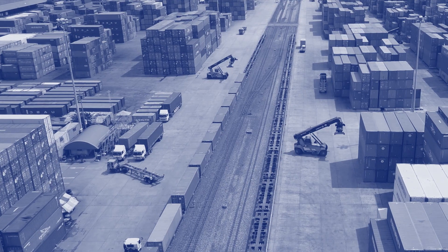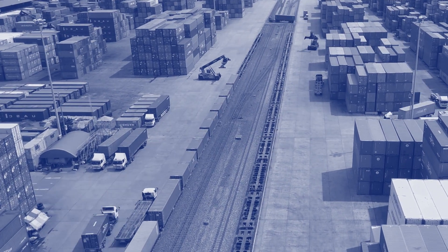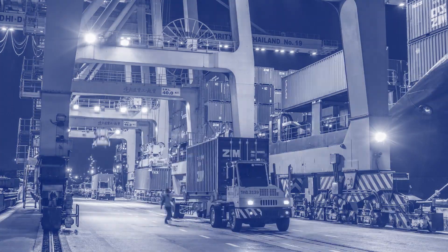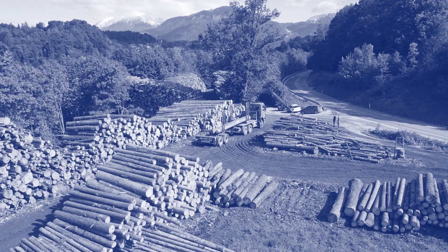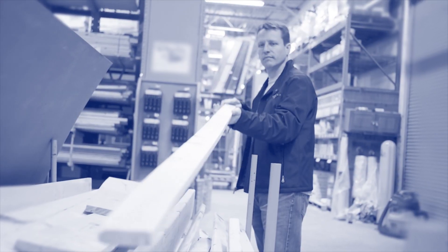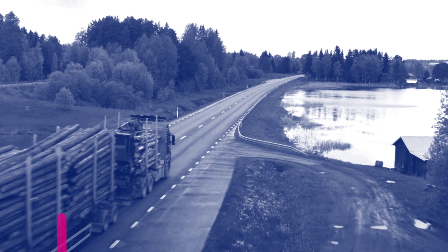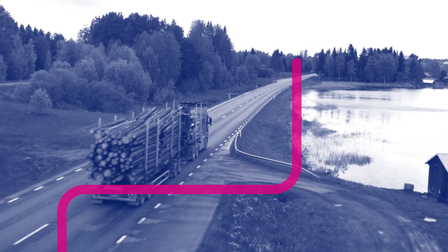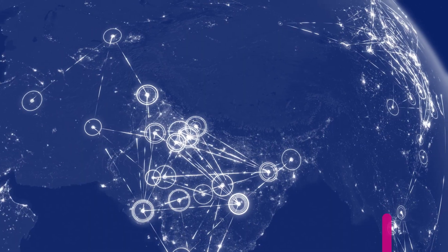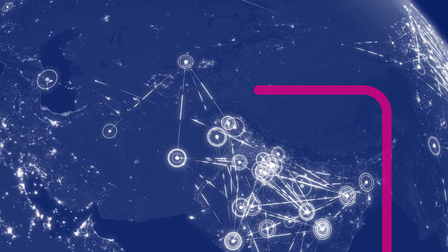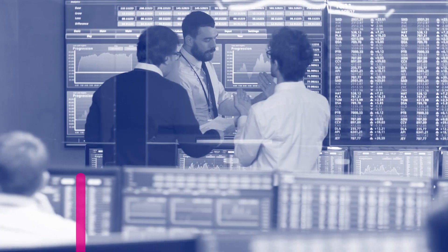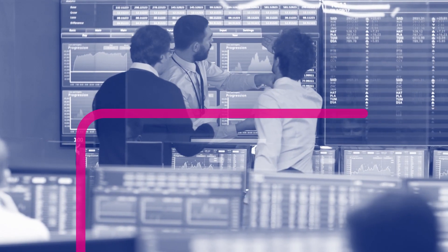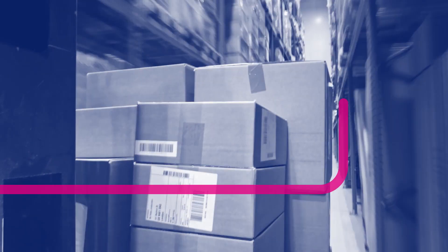The supply chain of yesterday was linear, sequential, and static. From raw material to the consumer, the path was monolithic and predictable. Today's multi-directional supply chains change constantly, so companies must move as fast as shifting markets or risk being left behind.